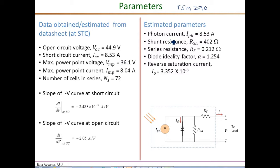So we use these values to estimate the required parameters in our PV model. The photon current IPH was same as the short circuit current 8.53 amperes. The shunt resistance R shunt is one over the slope of IV curve at short circuit. So it's minus one over this value, giving us 402 ohms.